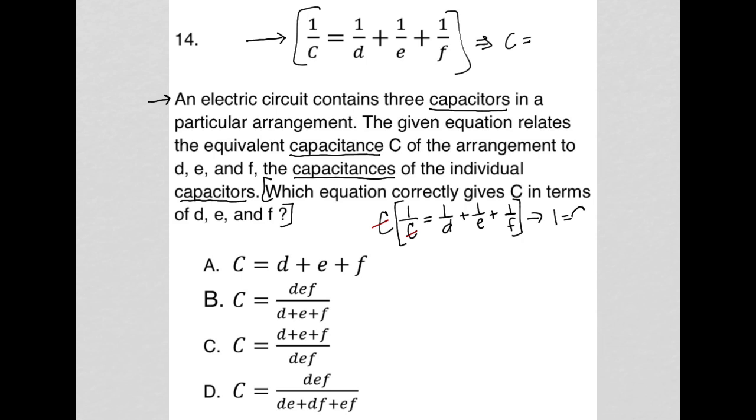And on the right, I'm going to leave it undistributed. So I'd have C parentheses 1 over D plus 1 over E plus 1 over F. So I did not distribute on the right-hand side because I just want a single C. If I distribute it, I'll have three separate Cs, which is creating a new problem for myself that I don't really need to have.